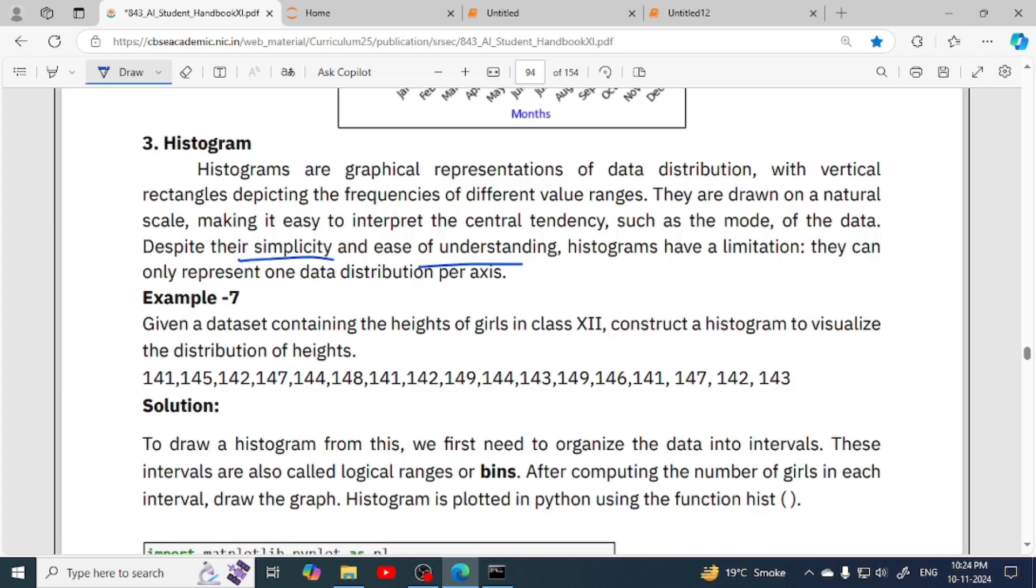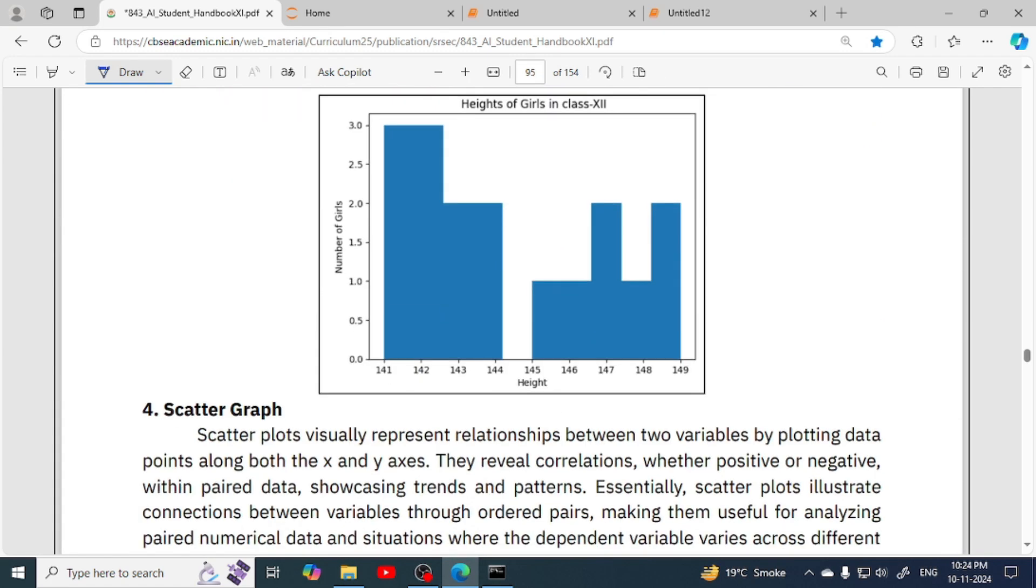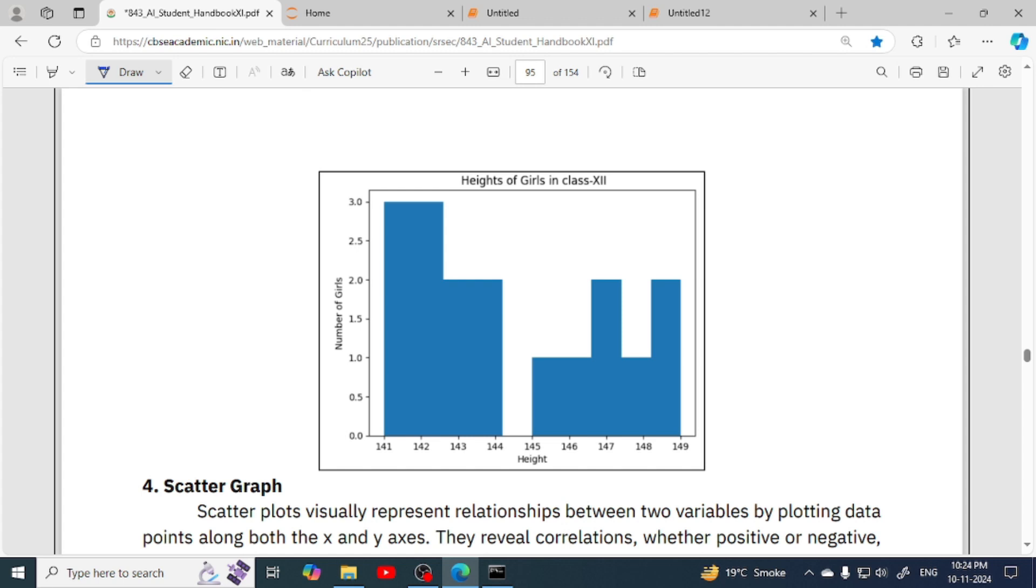Despite their simplicity and ease of understanding, histograms have a limitation. What is the limitation? It can only represent one data distribution per axis. We can see here in the chart, in this histogram chart, only height of girls is represented. So we can only show one type of data distribution in this chart.